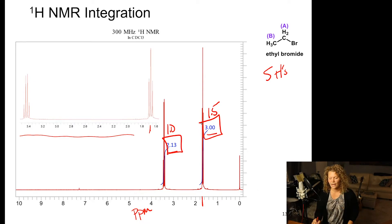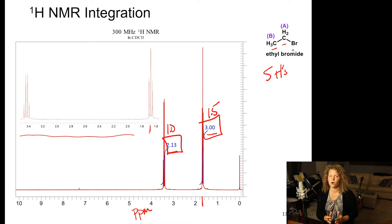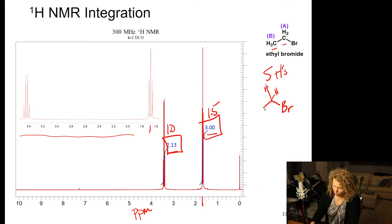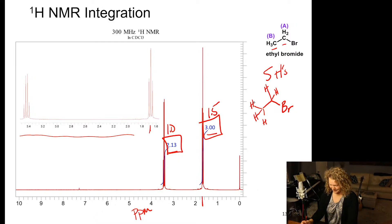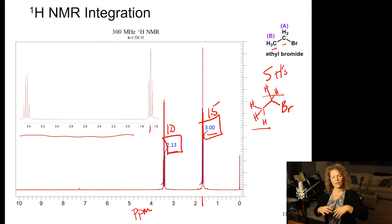Why do we have 2 signals for ethyl bromide? We have a CH₃ and a CH₂ attached to bromine. The reason we have more than one signal is because we have more than one type of proton. The hydrogens on the CH₂ have a different environment — they are attached to a carbon directly bound to a bromide — so those 2 protons are different from the 3 protons on the methyl. In this case we have 2 sets of protons.